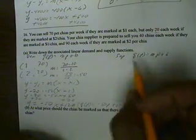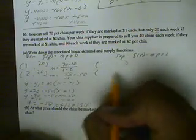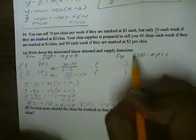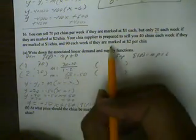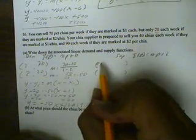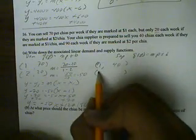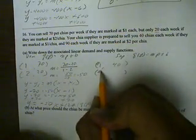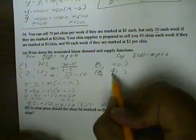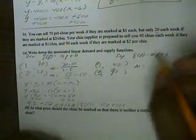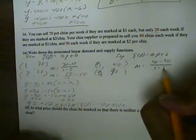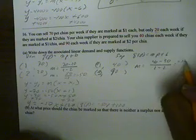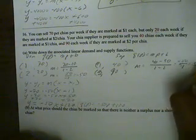For the supply function, input and output. The input price, the output is going to be the quantity or the supply. So, for $1, if you input $1, you'll only get 40 supplied. But if you charge $2, you can get 90 supplied to you. M is going to equal 40 minus 90 over 1 minus 2. This will be a negative 50 over negative 1, which is 50.